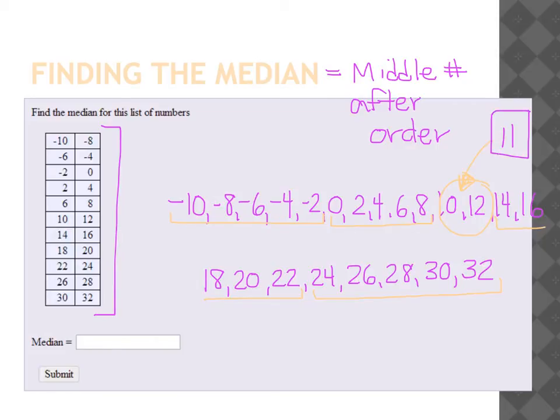Now if you get numbers that have decimals in them, or are further apart than just 2, you may have to do a little bit of math to get the number in the middle. Okay? So to do that, you add the two middle numbers, 10 plus 12, and divide the result by 2. In this case, 10 plus 12 is 22. And if I divide that by 2, we get a result of 11. 11, then, is the median of this set of numbers.